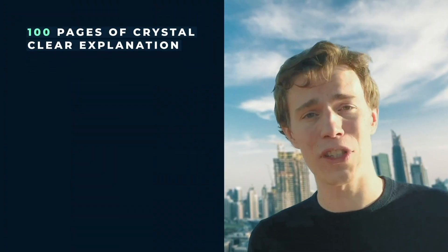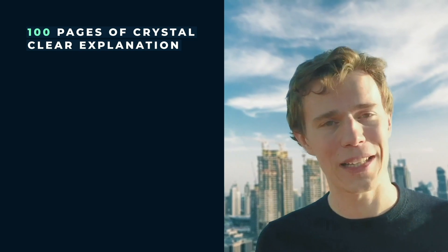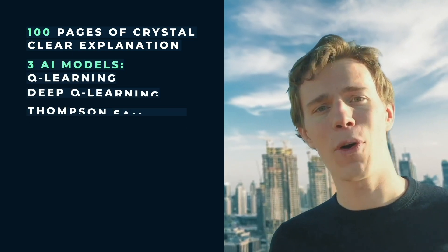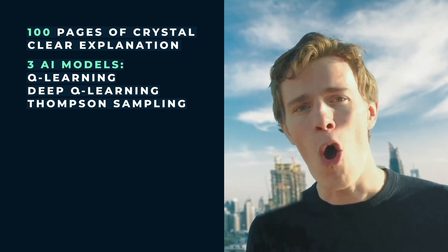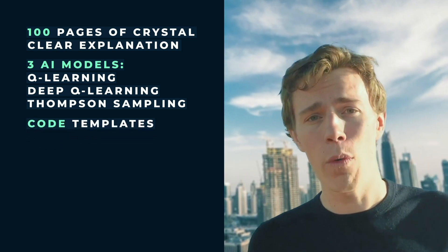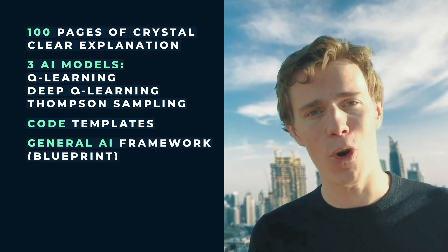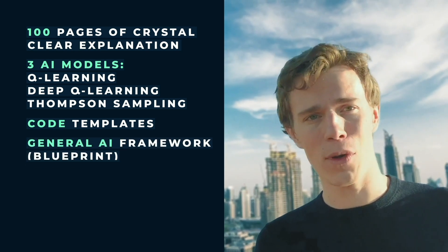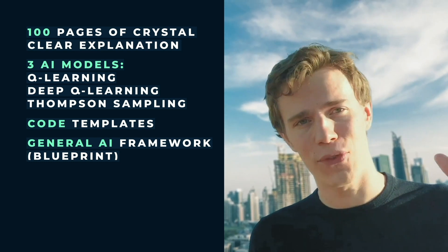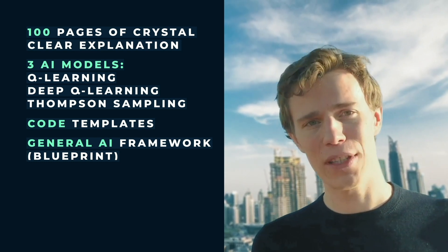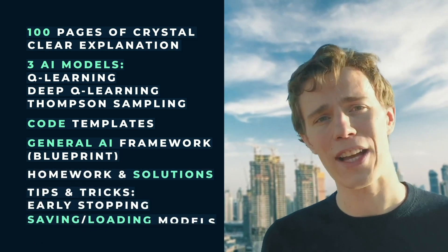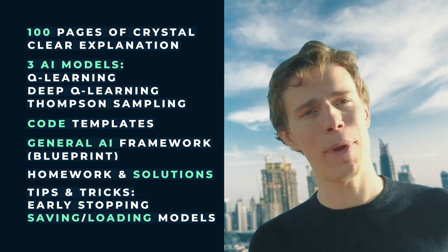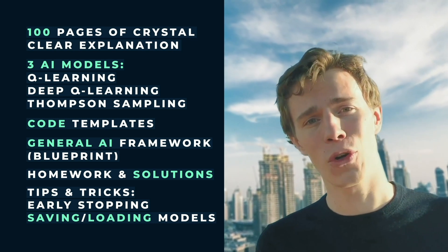This book includes tons of things: 100 pages of crystal clear explanations written in beautiful and clean LaTeX; all the AI models of the course, including Q-Learning, Deep Q-Learning, and the unbeatable Thompson Sampling; all the code templates of the course. And even better, we will give you a general AI framework — a blueprint containing the general steps of the AI process to follow when building an AI to solve any business problem. It also contains homework and their solutions, plus lots of extra tips and tricks like early stopping, saving and loading a model, to enhance your toolkit.